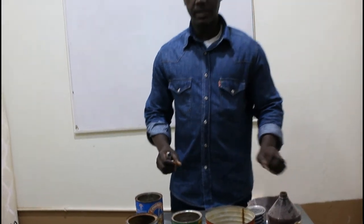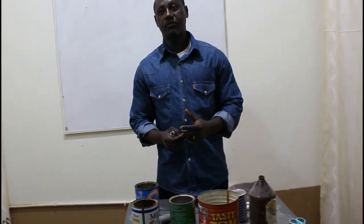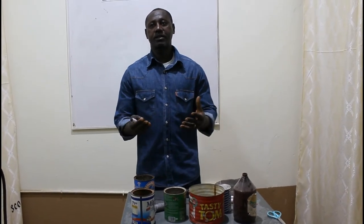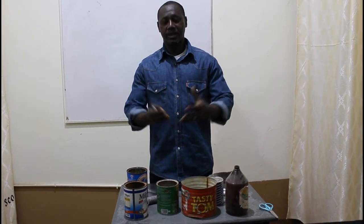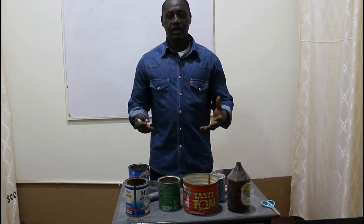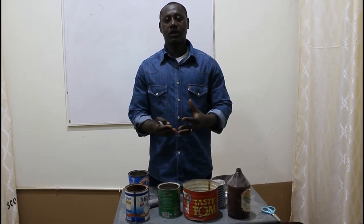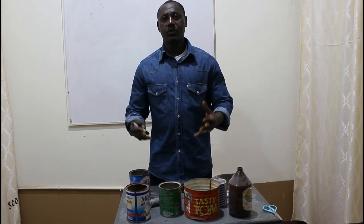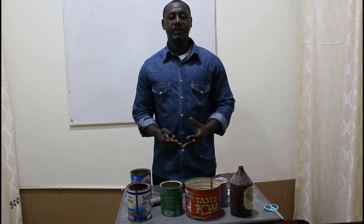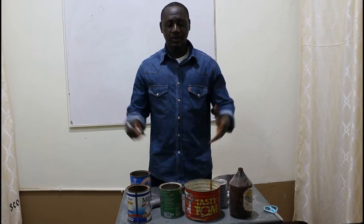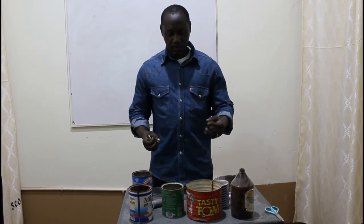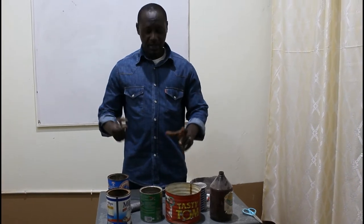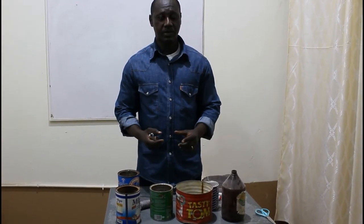What we are going to do is get the circumference. What is circumference? Circumference is the distance around a circular object. If it is a plane figure, we talk about the perimeter. But once it is a circular object, we consider the circumference — the distance around that circular object. We are going to look at how we can assist our pupils to determine the circumference of a circular object.